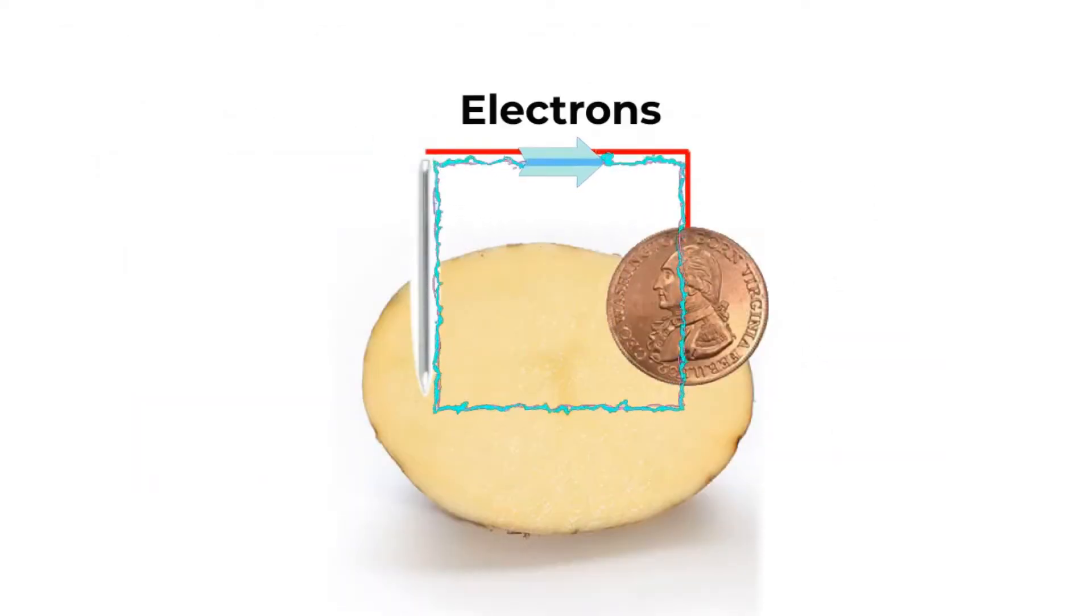In our experiment, the potato acts as a buffer or an electrolyte. Electrical energy is generated by two chemical reactions that happen at the electrodes. Our electrodes are the galvanised nail and our copper coin.